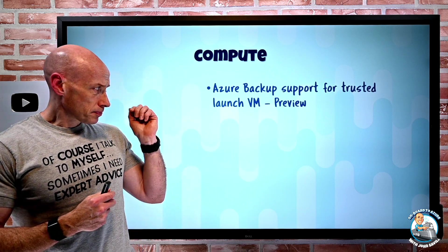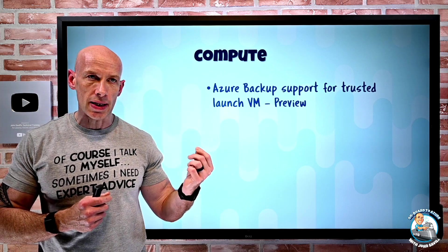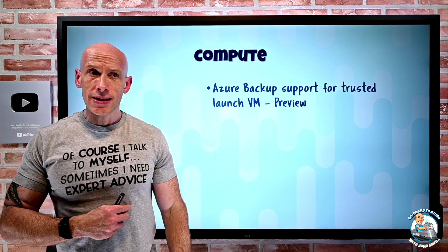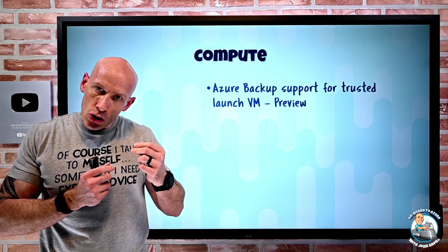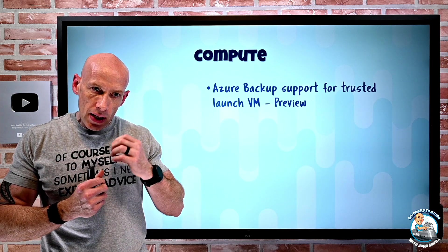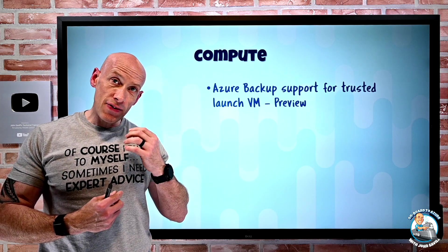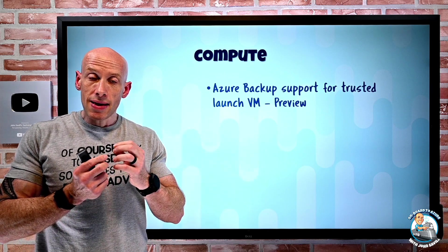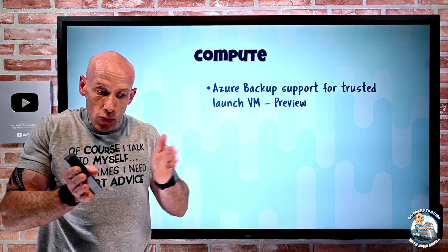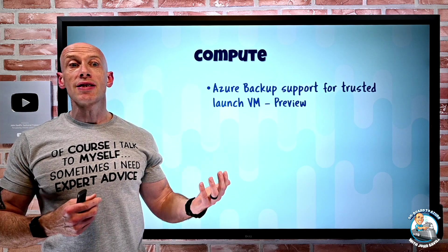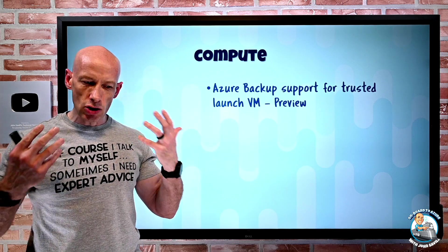On the compute side, Azure Backup now has support for trusted launch virtual machines. With the new Gen 2 virtual machines in Azure that use UEFI instead of BIOS-based, I can have a virtual TPM — a trusted platform module. When I have that Gen 2 and that virtual TPM, it lets me have things like secure boot, which gives me a guarantee from the UEFI to the start of the OS boot with no rootkit sitting in between. We also have virtualization-based security (VBS) for secure, isolated bits of memory to run certain processes in.